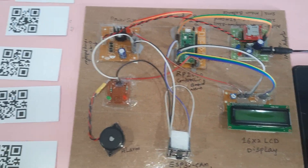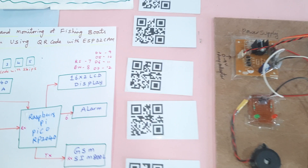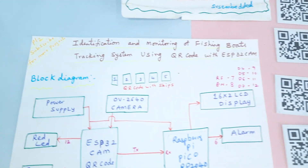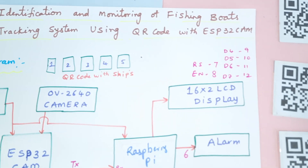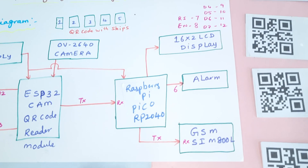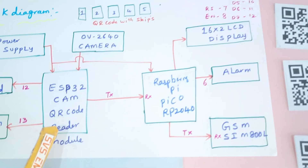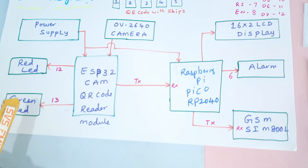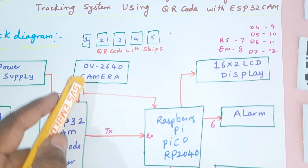Hi, we are from SV Assembly. The project title is: Identification and Monitoring of Fishing Boats Tracking System using QR Code with ESP32 Camera Module. We are using a Raspberry Pi Pico RP2040 board, an ESP32 camera module, one red LED, one green LED, and an OV2640 camera module.